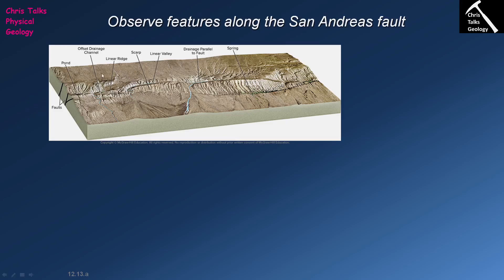Because the fault scarp forms in response to fault movement, there will also be areas where aquifers — water-bearing layers of rock — intersect the surface of the earth, leading to the formation of natural springs. You can see one in this picture as a slightly vegetated area.